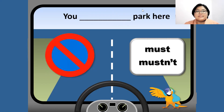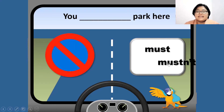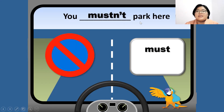How about this? 'You blank park here.' Look at the sign — it has red on it. What do you think the answer — must or mustn't? The answer is mustn't. You mustn't park here.